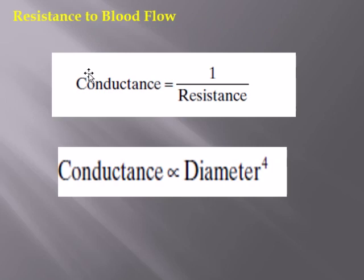Conductance is the opposite of resistance — it is the inverse of resistance. More resistance means lesser conductance and vice versa. Conductance is directly proportional to the fourth power of the diameter or radius. When the diameter is doubled, the conductance increases not twice but 2 to the power of 4, which is 16 times.